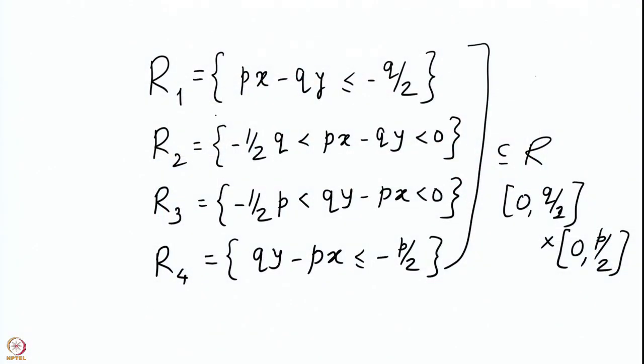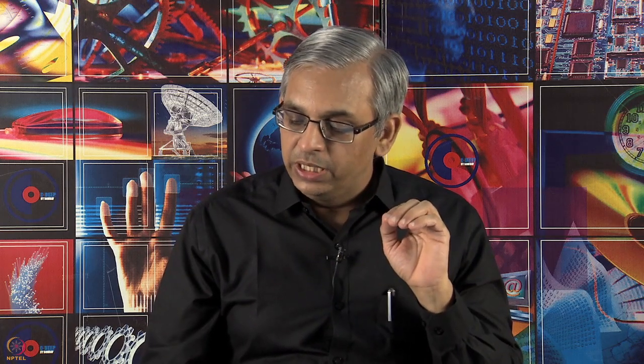Here are those 4 parts on the screen: R1 is given by a particular equation, then R2, R3, and R4. These 4 parts together give you R. R is the disjoint union of the Ri as far as the lattice points are concerned. Of course, set-theoretically it is not quite the union of R1, R2, R3, R4 because the boundary lines have been omitted, but for lattice points this union is valid.